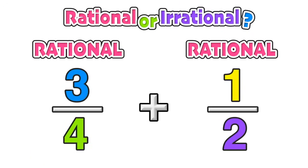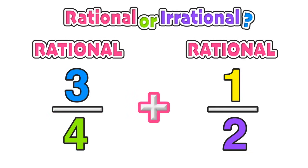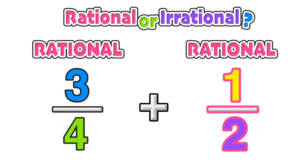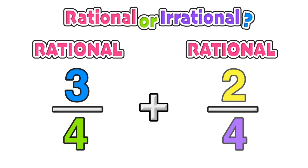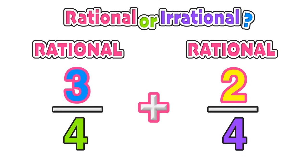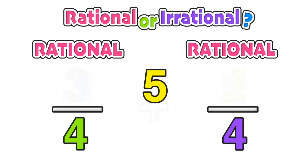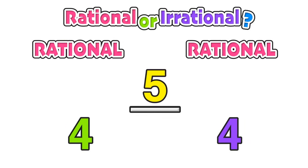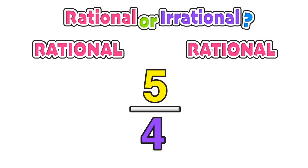Let's look at an example with actual numbers. We'll take the ratio of 3 over 4 and add it to the ratio of 1 over 2 — both are rational numbers. Since we need a common denominator, we can rewrite 1 over 2 as 2 over 4, giving us a common denominator of 4. That allows us to add the numerators: 3 plus 2 is 5, all over 4. Of course, 5 over 4 is a ratio of two integers, which means it is a rational number.